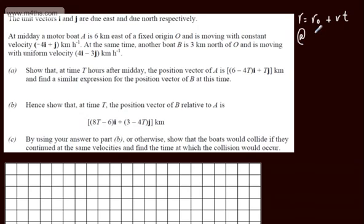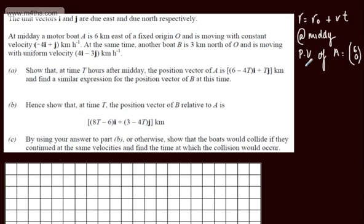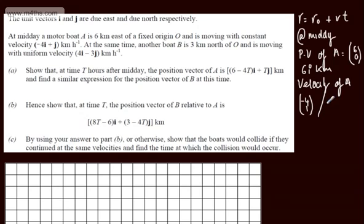So at midday, the position vector of A is, in column form, (6, 0) — that is 6 km east — or in i and j notation, 6i km. The velocity of A in column form is (−4, 1), or in i and j notation minus 4i plus j, and that's km per hour.